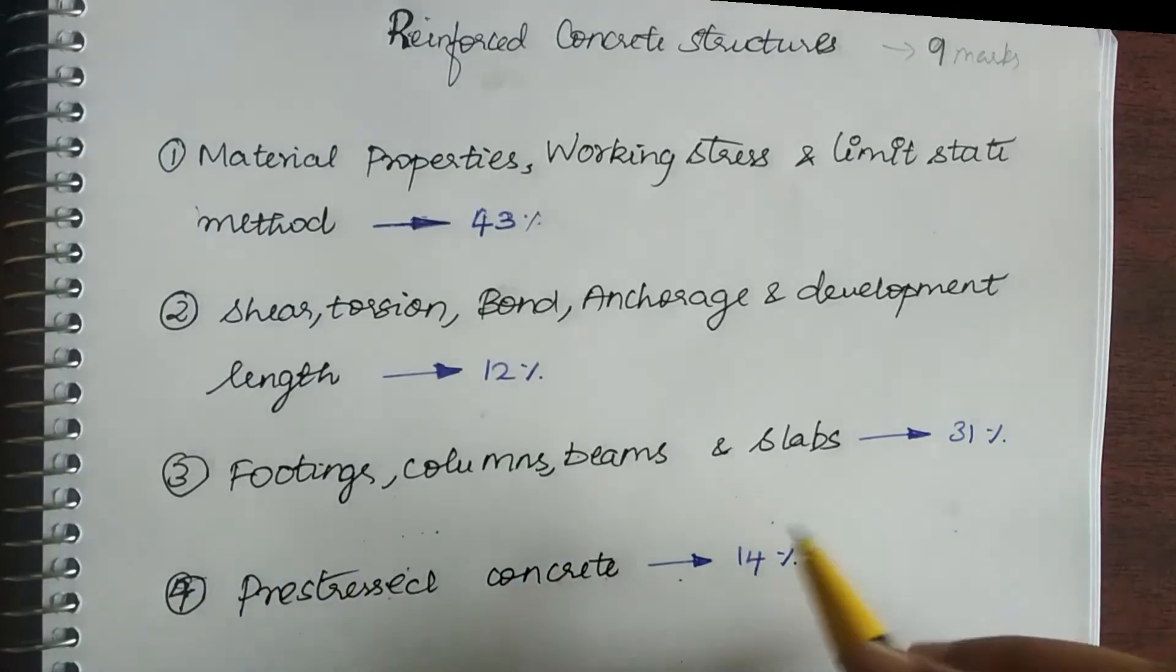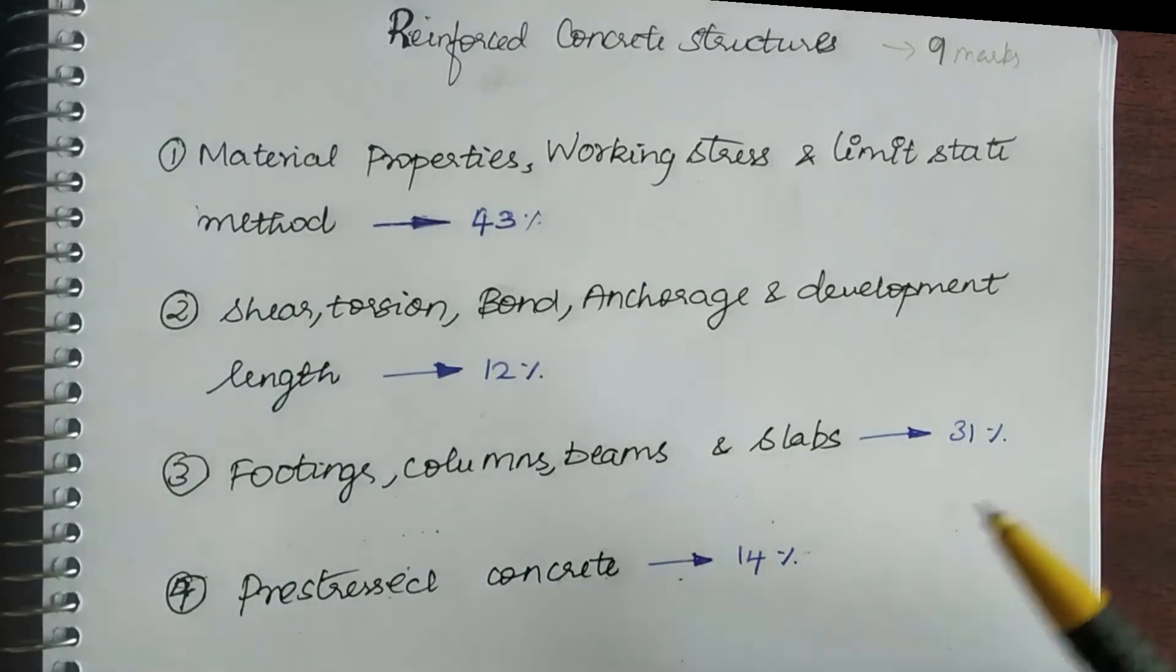Next is footings, columns, beams, and slabs. This comprises of 31 percentage, which is like around two marks. The thing here is they are not going to ask you conventional questions like your semester exam. They are going to ask you simple questions, and at times there can be tricky questions that will lure you into using more of your time. Make sure you are not falling into such traps.